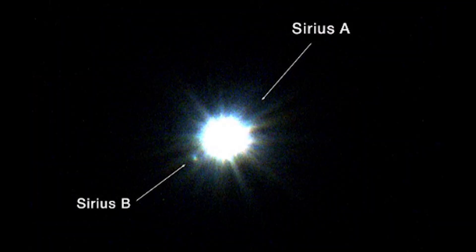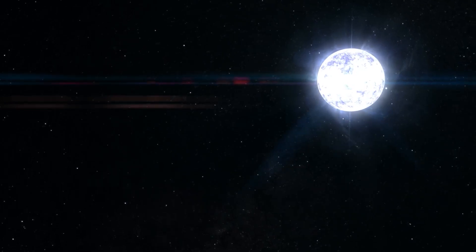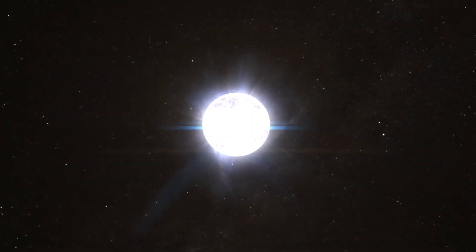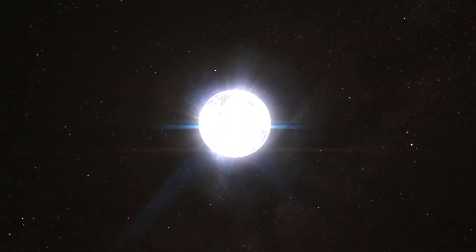Sirius B, the companion star to Sirius A, is a fascinating example of stellar evolution. Discovered in the 19th century, this white dwarf was once a massive star undergoing significant changes as it aged. After exhausting its nuclear fuel, Sirius B collapsed under its own gravity.